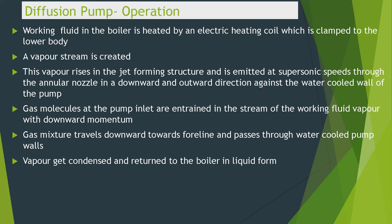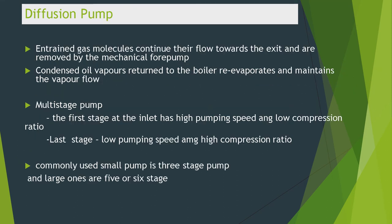The gas molecules at the pump inlet are entrained in the stream of working fluid vapor with downward momentum. The gas mixture travels downward towards the fore line and passes through the water-cooled pump walls, where the vapor gets condensed and returns to the boiler in liquid form. The entrained gas molecules continue their flow towards the exit and are removed by the mechanical pump. The condensed oil vapors return to the boiler, re-evaporate, and maintain the vapor flow.